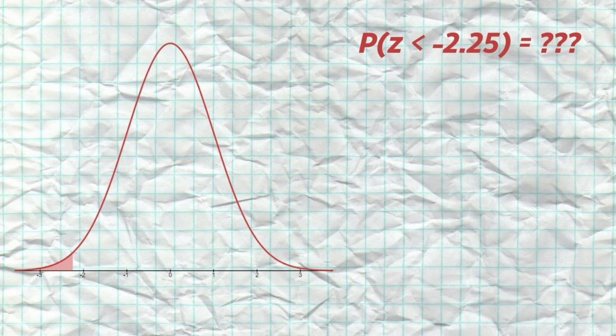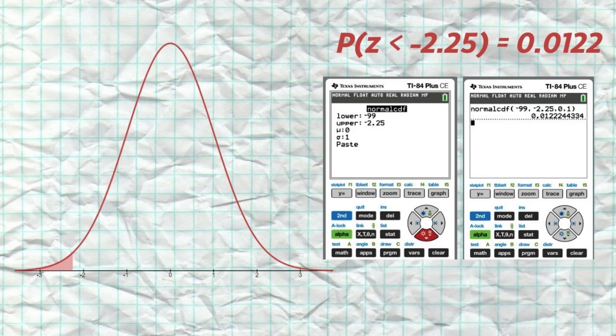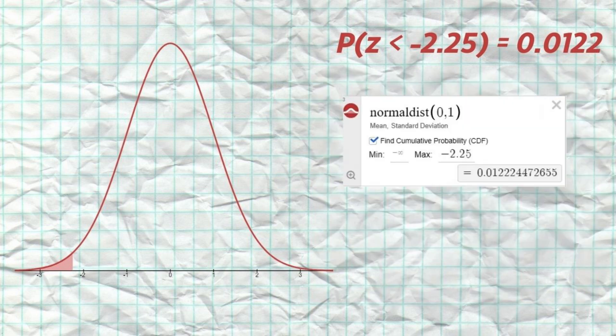Here's another example looking at the proportion of observations below a z-score of negative 2.25. Once again, we could use a normal table, a calculator, or Desmos to find this proportion. But through any of those methods, we find out that 1.22% of all observations will fall below a z-score of negative 2.25.